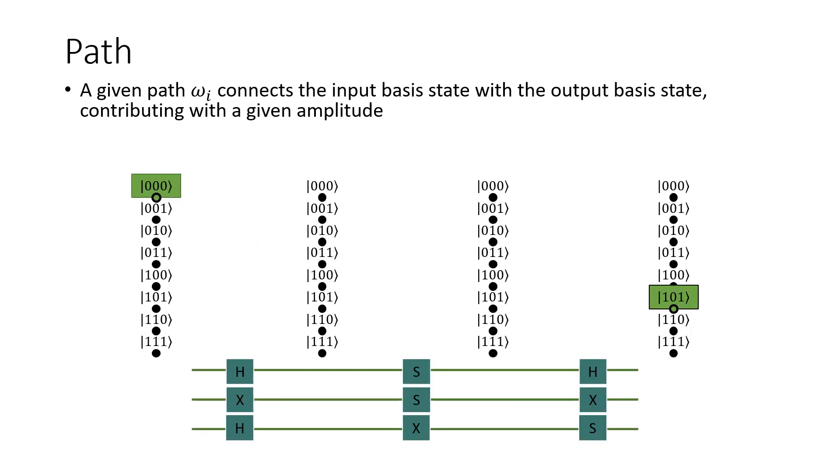A path omega i connects the input basis state with the output basis state, contributing with an amplitude. A path is obtained connecting the initial state to an intermediate state after the first layer, then to another intermediate state after the second layer, and so on until the output basis state is reached.